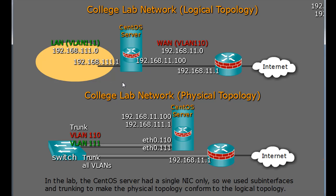The problem at the college was that the computers we were going to put CentOS on only have one NIC — one Ethernet port. So to make the CentOS server work with only one Ethernet port and no extra Ethernet cards, we set up subinterfaces and VLANs and used a trunk to the switch. Instead of just having Ethernet 0, we turned it into Ethernet 0.110 for the 11 network and Ethernet 0.111 for the 111 network — essentially two IP addresses on one Ethernet port.